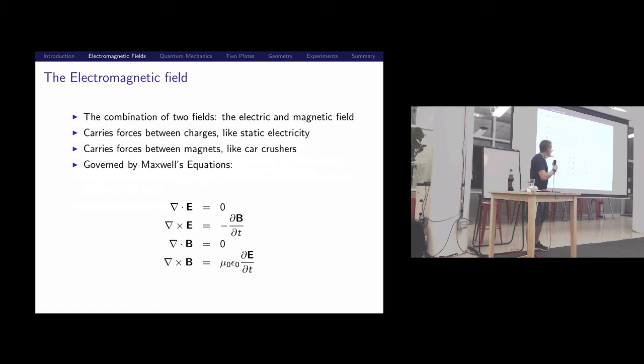It's two fields in one. It's the electric field, that's what gives you static electricity when you rub your head and balloons are stuck to it. And then there's the magnetic field, which is what lets you run car crushers and stick things to fridges. Those two fields can be unified into the same set of dynamics by these equations. If we consider a world where there's no charges, like no electrons or protons, and where there's no changing currents, the equations have this beautiful symmetry.